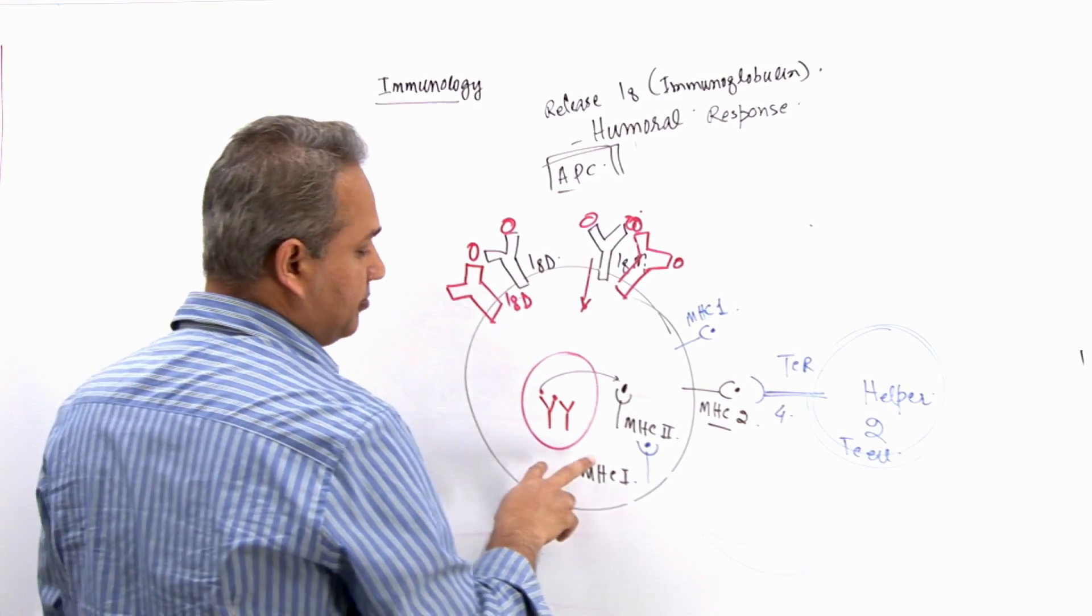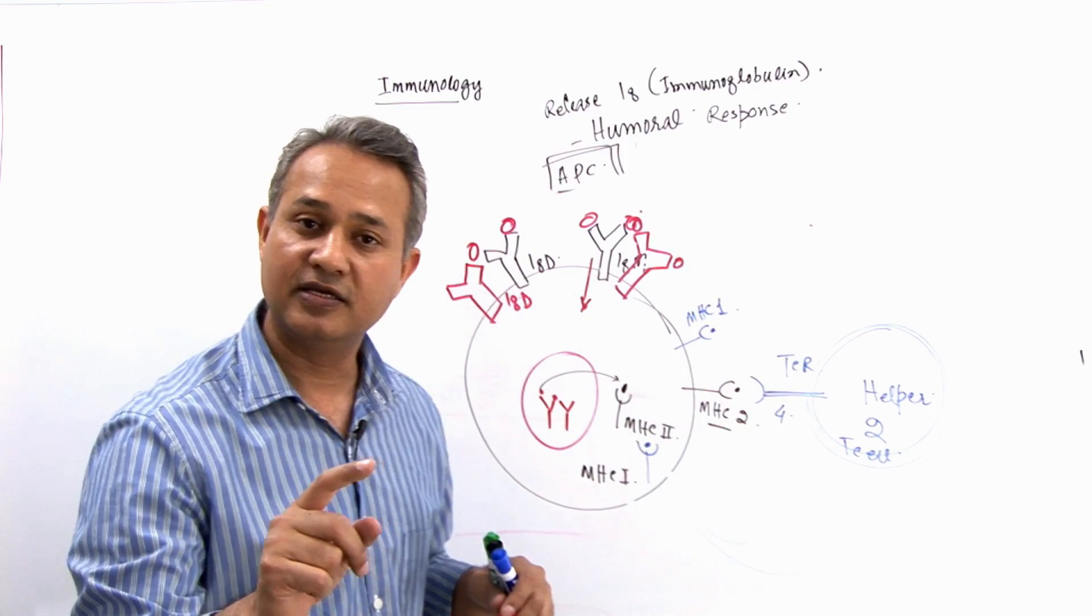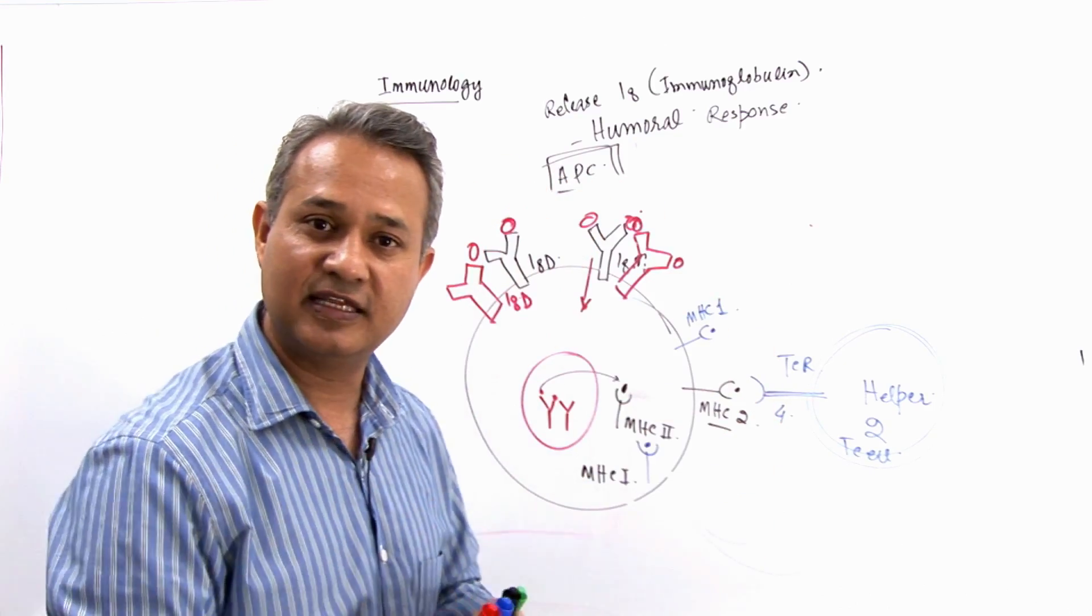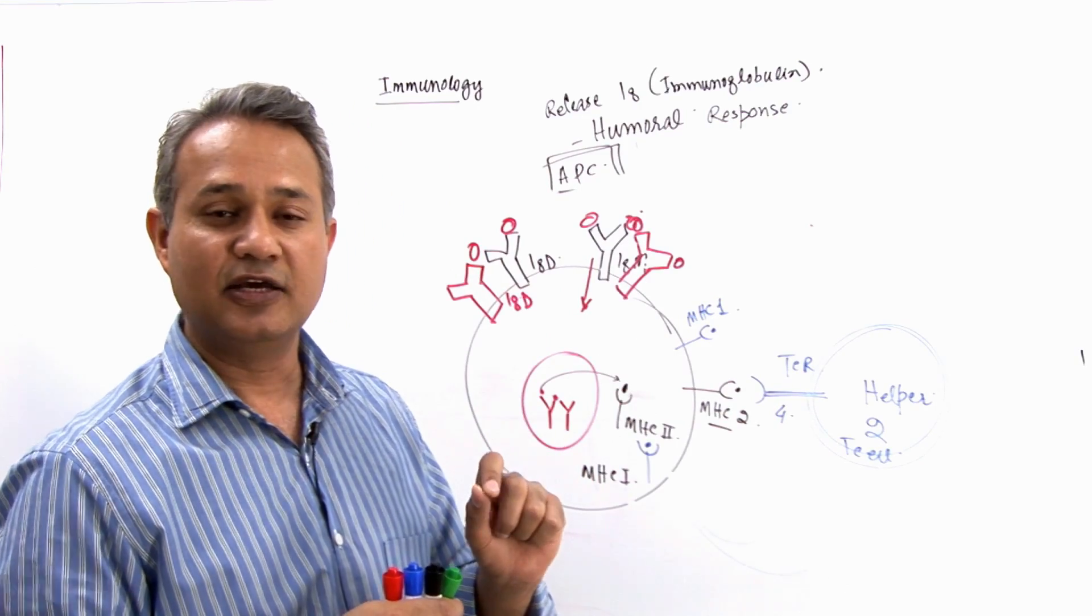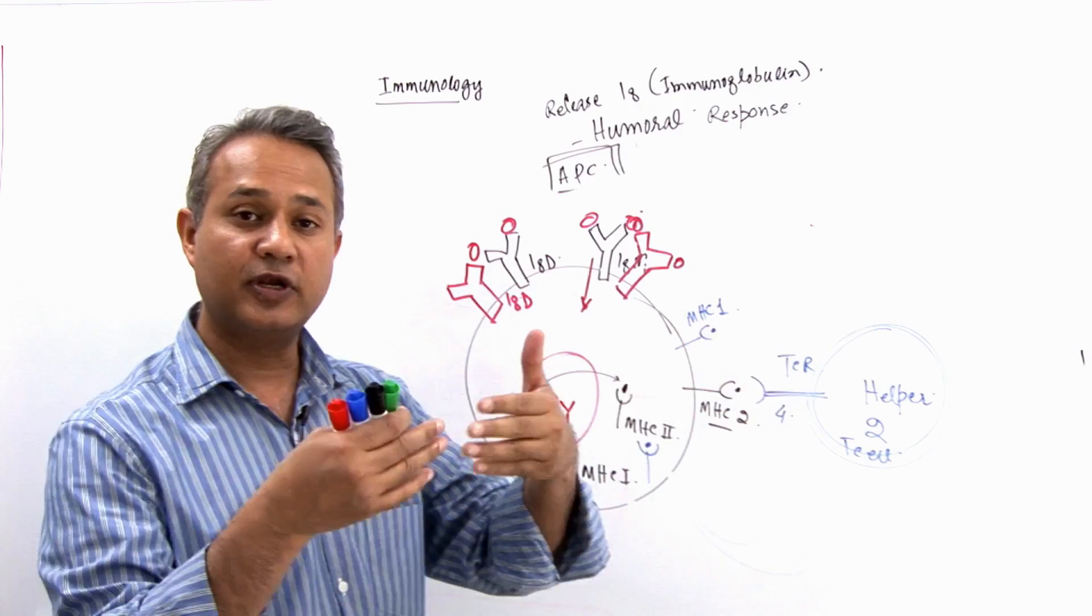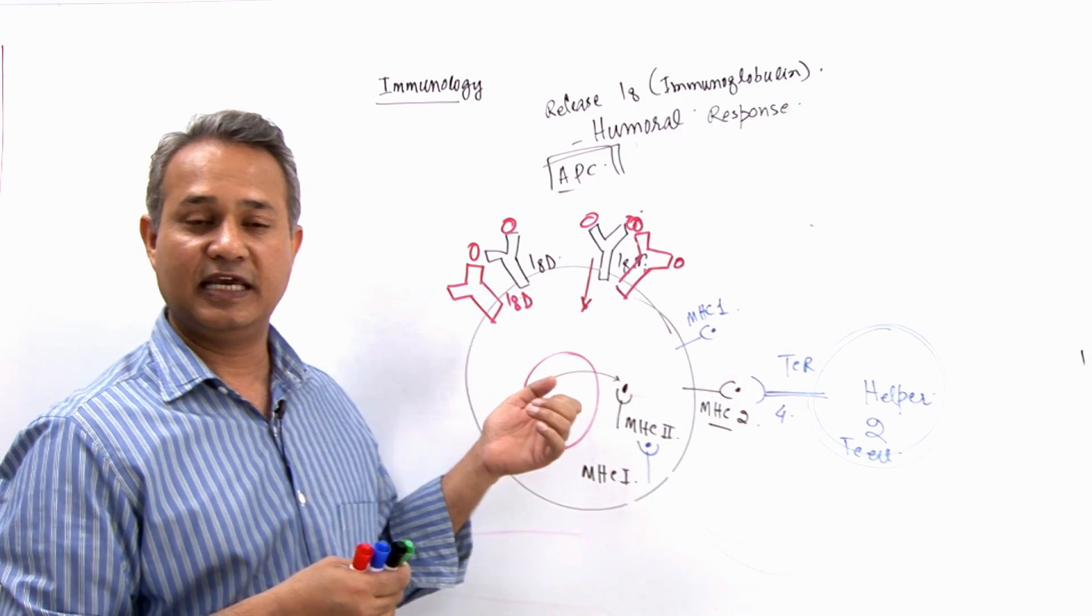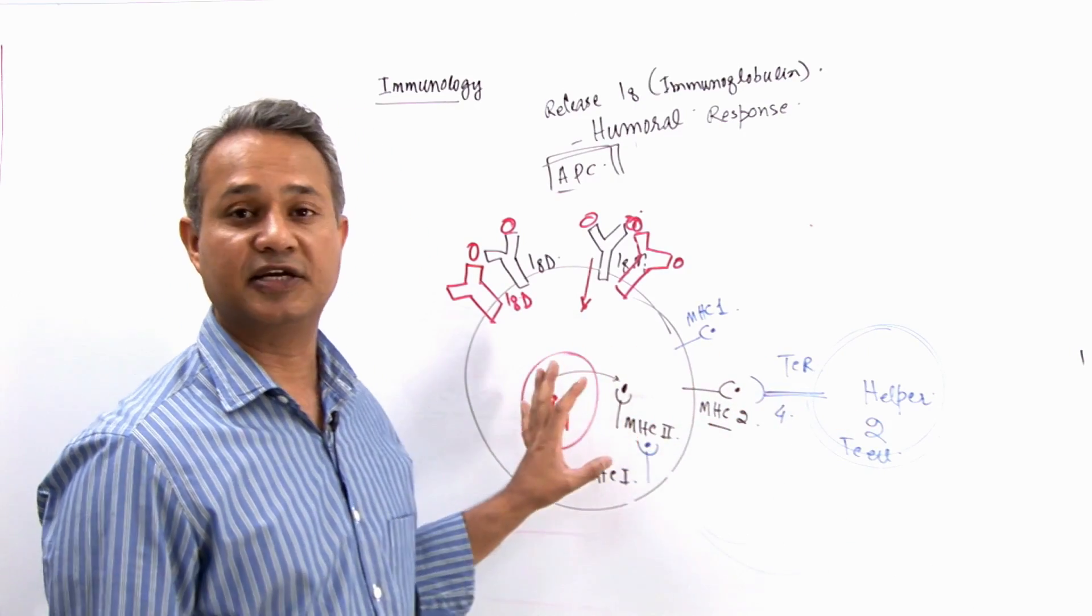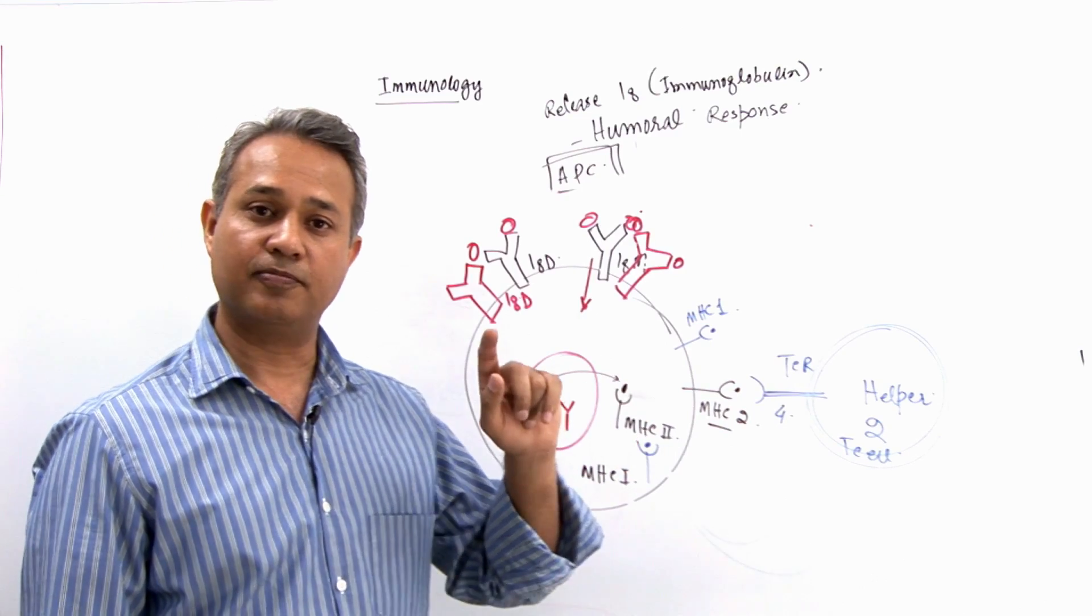Then what happens? Now pay attention to this one. B-cell needs to activate the T cell only so that T cell can activate the B-cell. This is why they are acting as an APC. They are acting as an APC so that a T cell can come connect with them so they can become active.